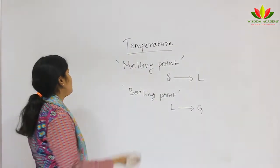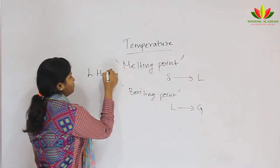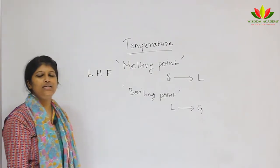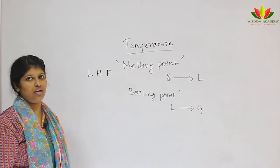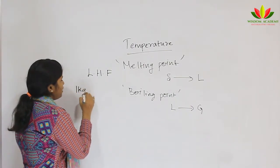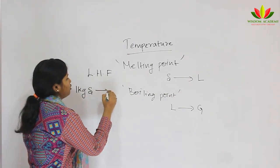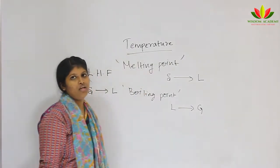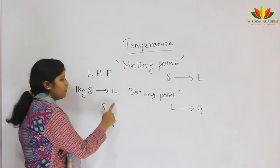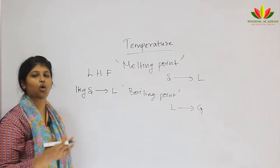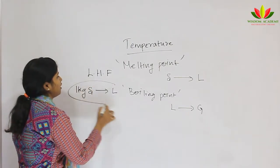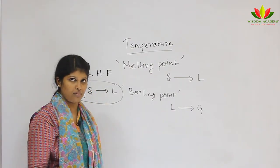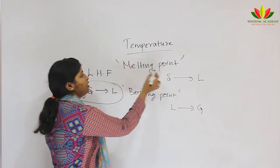There is something called latent heat of fusion, or LHF. It is the amount of heat energy required to convert 1 kg of solid to liquid at atmospheric pressure at its melting point. So here, 1 kg of solid is converted into liquid, and the important conditions are atmospheric pressure and the particular melting point.